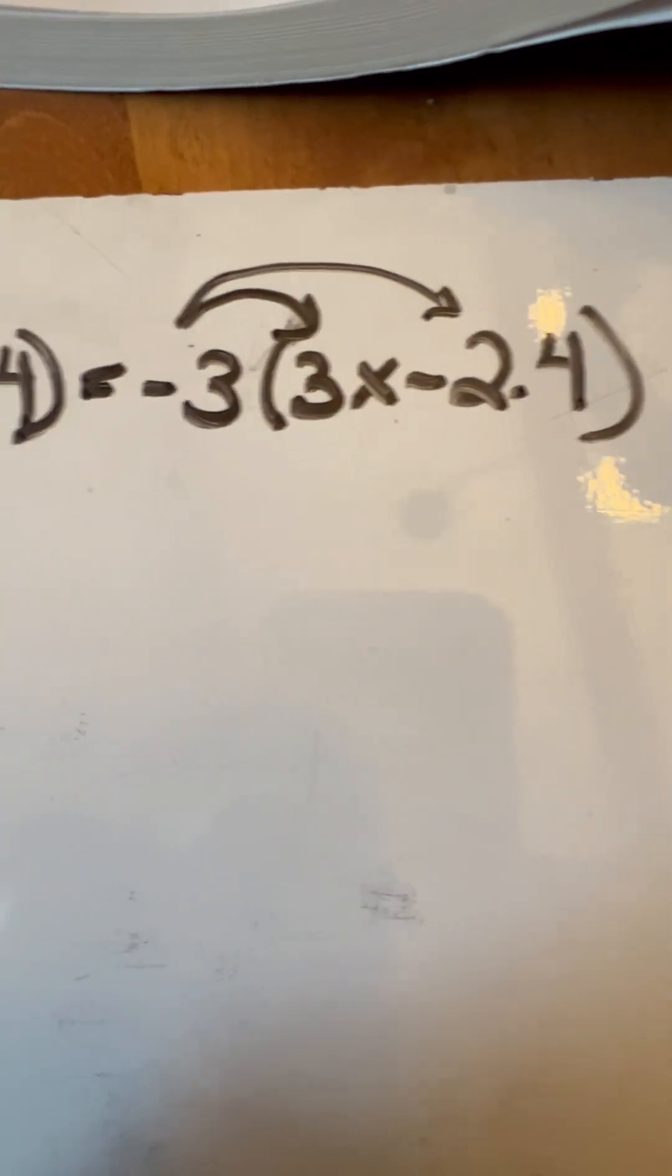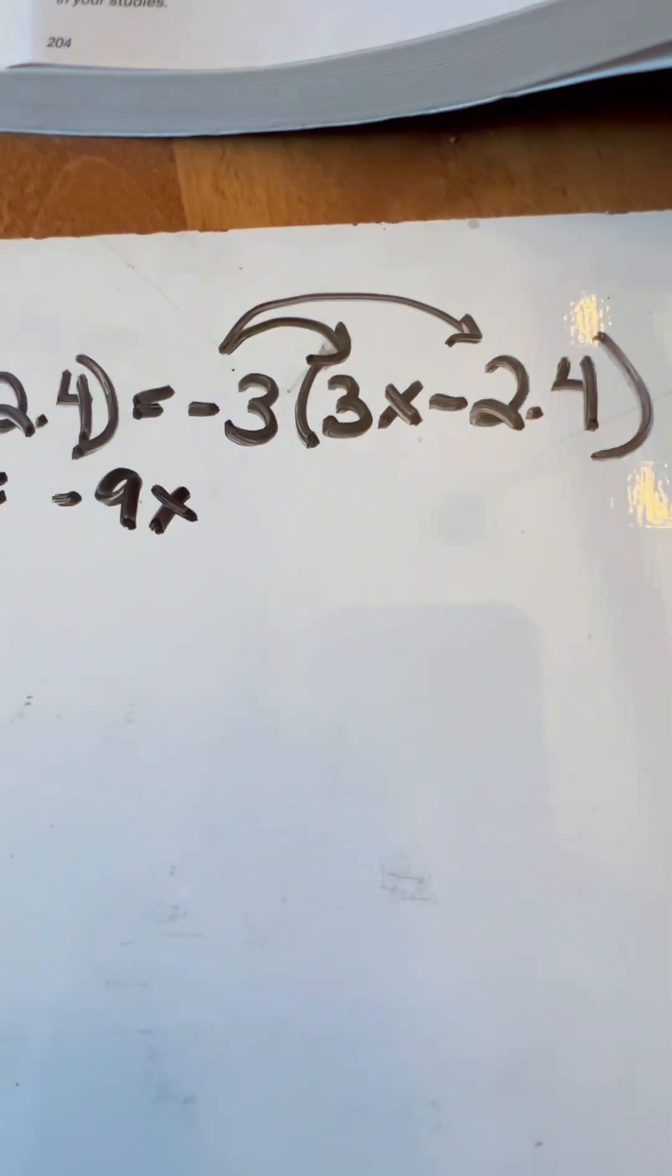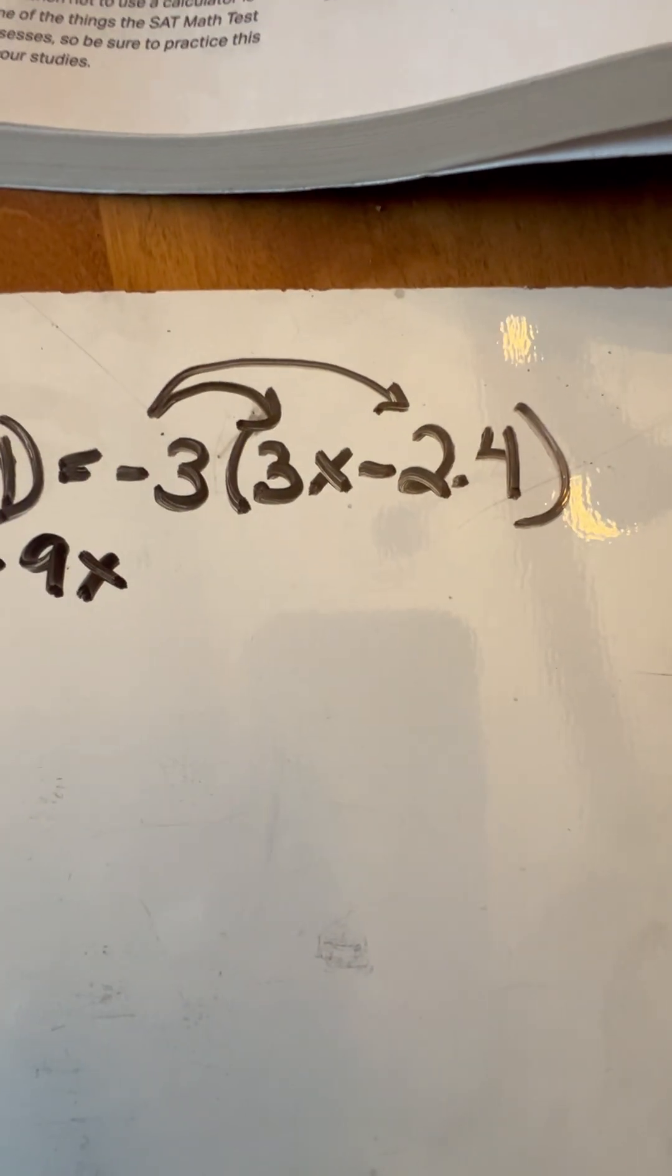Over here, we're going to do the same thing. Negative 3 times 3X is going to be negative 9X. And you notice that that is also a negative 2.4.